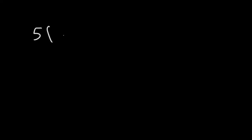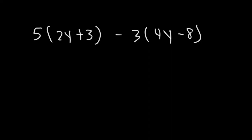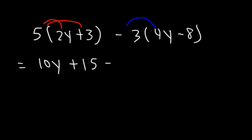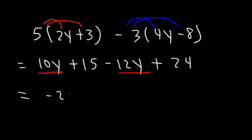Here's a similar example: 5 times the quantity 2y plus 3, minus 3 times the quantity 4y minus 8. Distributing: 5 times 2y is 10y, 5 times 3 is 15, negative 3 times 4y is negative 12y, and negative 3 times negative 8 is positive 24. Combining like terms: 10y minus 12y is negative 2y, and 15 plus 24 is 39. The final answer is negative 2y plus 39.